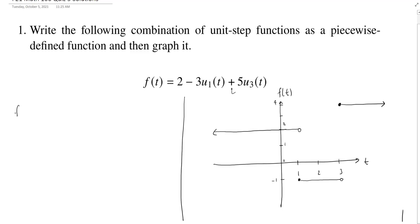And so writing down f as a piecewise function should be pretty routine at this point. First, from negative infinity all the way up to 1, we get a constant value of 2.